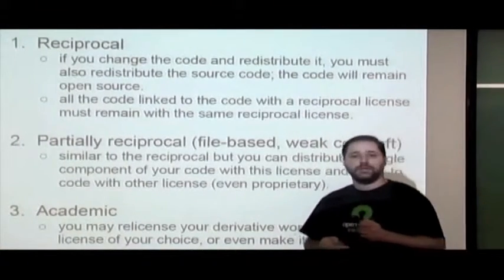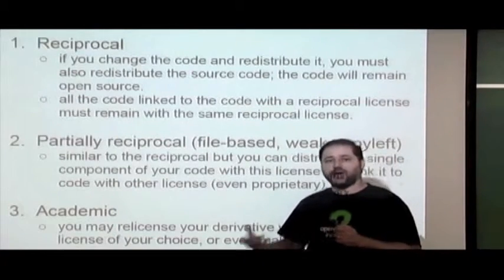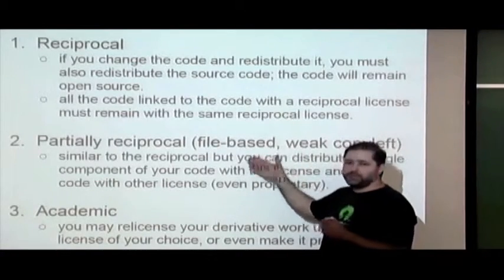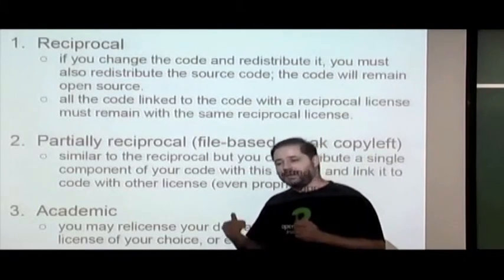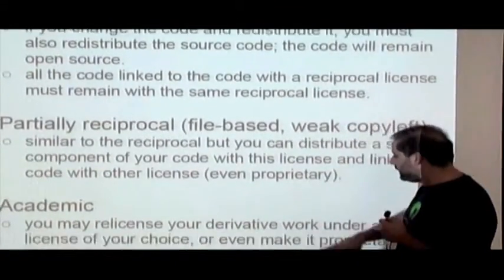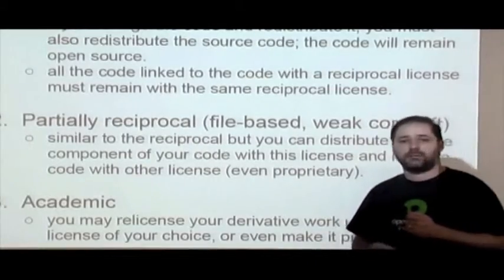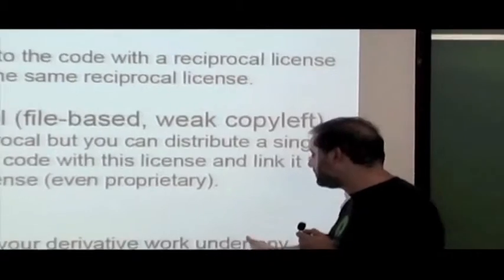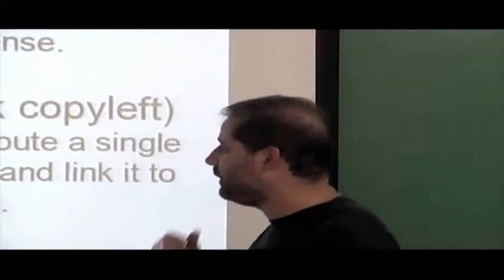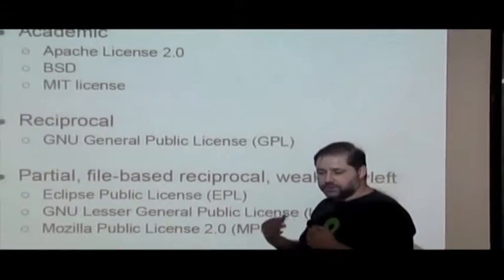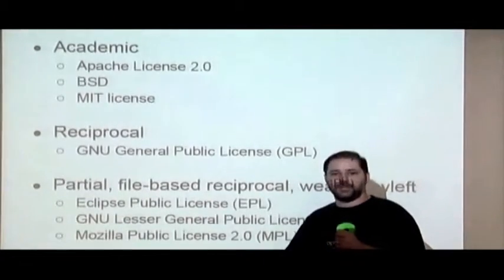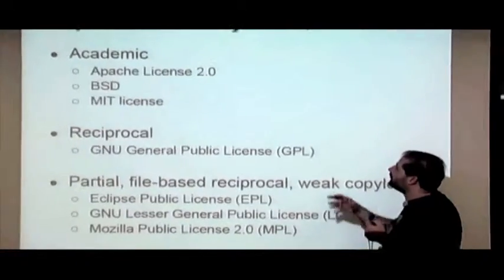There are also partially reciprocal licenses, which are usually file-based: if you modify a specific file, that file must be distributed under the same license, but other associated files can be licensed differently. And then there are academic licenses — very permissive, requiring no reciprocity — you can usually distribute the resulting software under any license you want. These three types cover the most important and widely-used licenses.